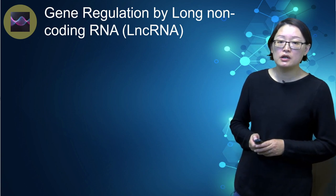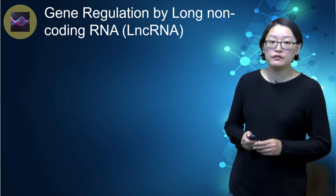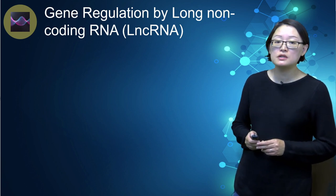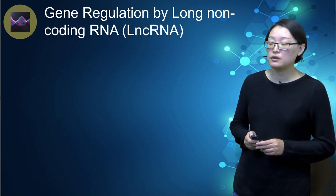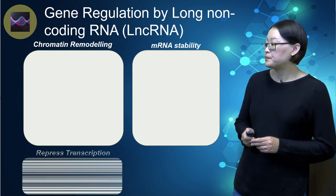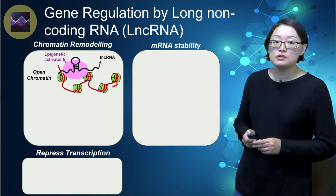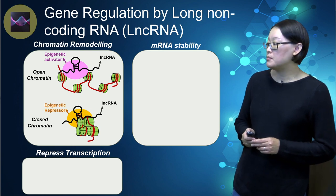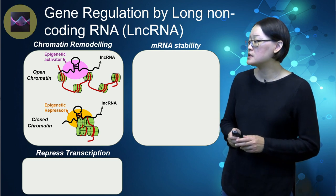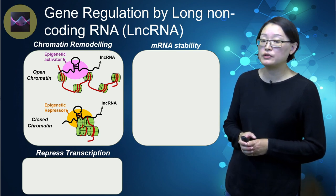Similar to short non-coding RNA, long non-coding RNA also regulates gene expression, but through very different mechanisms. Long non-coding RNA regulates gene expression at multiple levels by interacting with proteins, RNA, and DNA to regulate either the structure of chromatin or mRNA stability. Furthermore, it can repress transcription directly. Long non-coding RNA can bind to proteins such as epigenetic regulators, acting like a scaffold to interfere with the structure of chromatin.